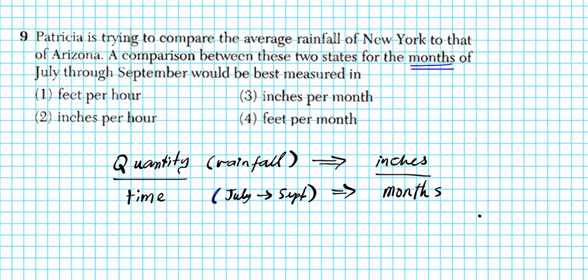So the best units for measuring the average rainfall is going to be inches, quantity of rainfall per month, the time unit that's on the consideration in this particular scenario. So the correct answer is option number three.